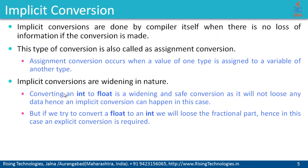Implicit conversions are done by the compiler itself when there is no loss of information if the conversion is made. This type of conversion is also called assignment conversion — it occurs when a value of one type is assigned to a variable of another type. Implicit conversions are widening in nature. That means converting an integer value to a float is a widening and also a safe conversion, as it will not lose any kind of data. Hence, an implicit conversion can happen in this case.